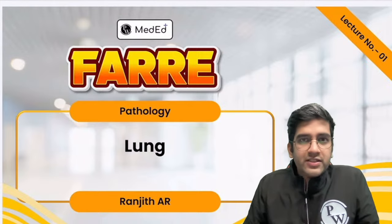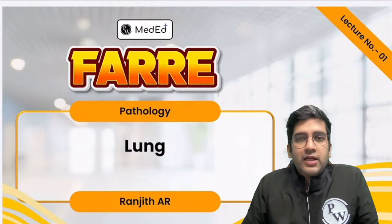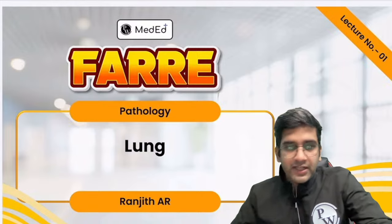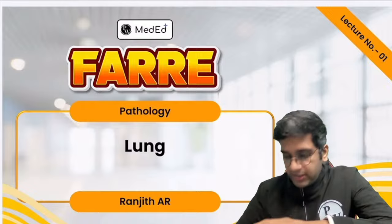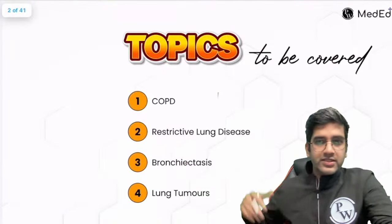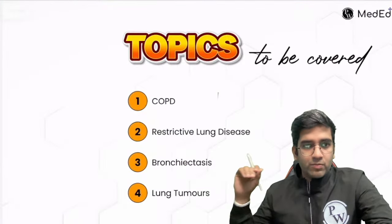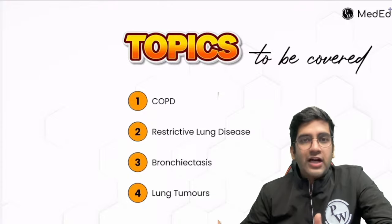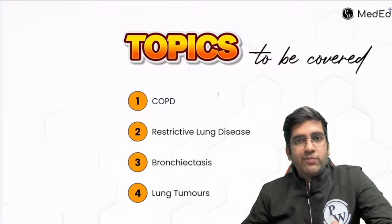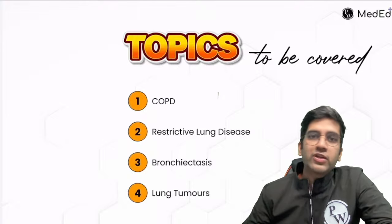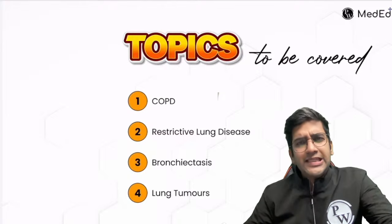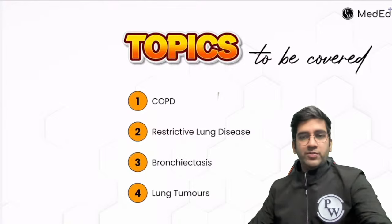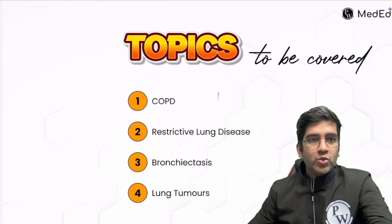We will be going with lung pathology today. It's a short chapter. In the upcoming class I'll cover the GIT and hepatobiliary system as well. In the topic of lung pathology, I'll be discussing COPD, restrictive lung disorders, bronchiectasis, and lung tumors. I am not including asthma here because asthma is primarily a type 1 hypersensitivity, which we already discussed in the immunology chapter.